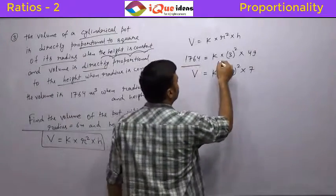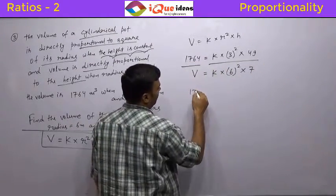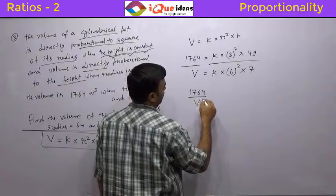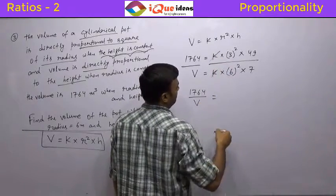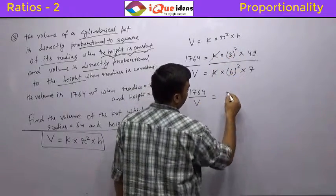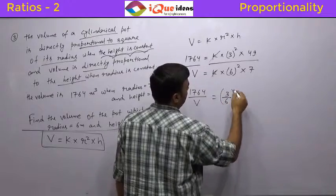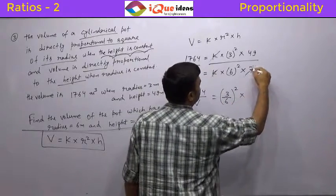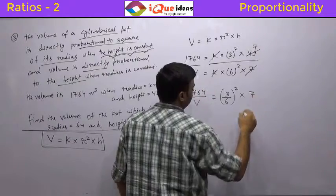I will still go ahead and simply divide these two equations. So on left hand side we have 1764 upon V equal to right hand side k gets cancelled. Now 3 square upon 6 square we can write them as 3 by 6 whole square into 49 by 7, this cancels, 7 cancels 49 seven times. So it is 7. 3 cancels 6 two times.